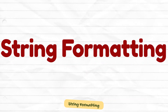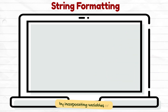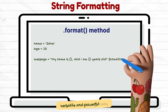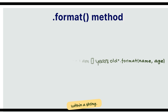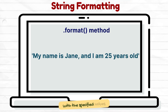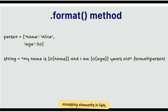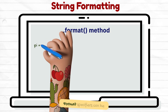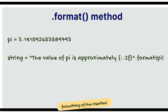String formatting allows you to create dynamic strings by incorporating variables or expressions. The format method in Python provides a versatile and powerful way to perform string formatting. The basic syntax involves using curly braces as placeholders within a string, which are replaced with the specified values passed to the method. The format method also allows accessing elements in lists or dictionaries directly by using indexing or keys within the placeholders.